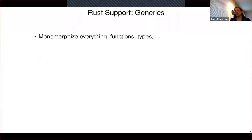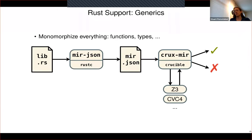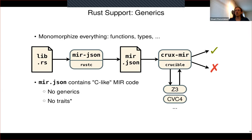Our handling of generics is based on monomorphization — we monomorphize everything, not just functions but also types. When the mir-json step dumps out all the code as JSON, if you have a generic struct instantiated several times, each one becomes an independent type with no link between them. This is essentially the same as what a real code-generating backend like the LLVM backend would do. So once mir-json runs, the JSON output has no generics at all — all generic functions and types have been monomorphized, and there are no traits, though we do output some information about vtable layouts for traits involved in trait objects.